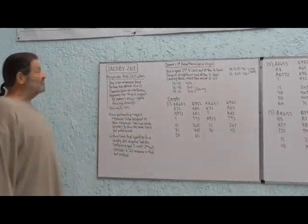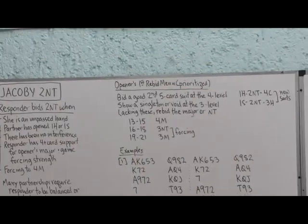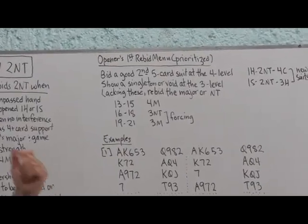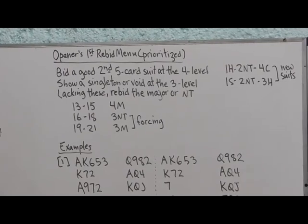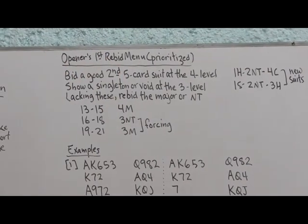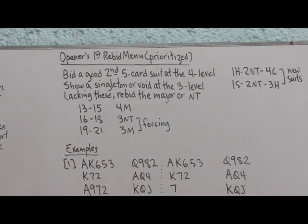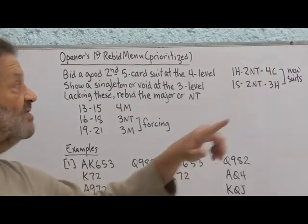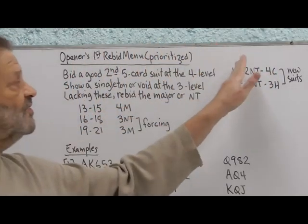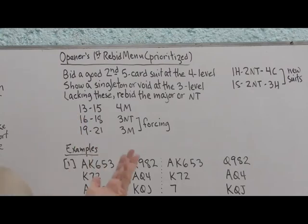Now let's look at opener's first rebid. We're in a Jacoby 2 No Trump sequence, we have opened a major. Partners respond to 2 No Trump. If we have a good five-card second suit, here's the time to bid it. What we mean by a good suit is two of the top three honors. And we bid it at the four-level. So if I have a good five-card heart suit, I have a good five-card club suit. And you, with your two-no-trump response, are showing me four-card heart support and game-forcing strength with a balanced or semi-balanced hand.